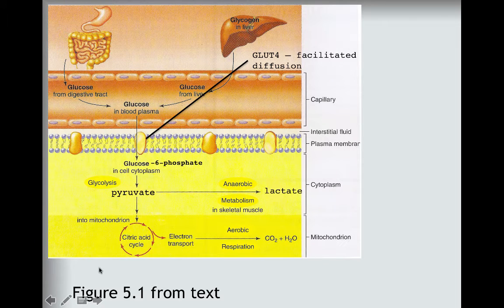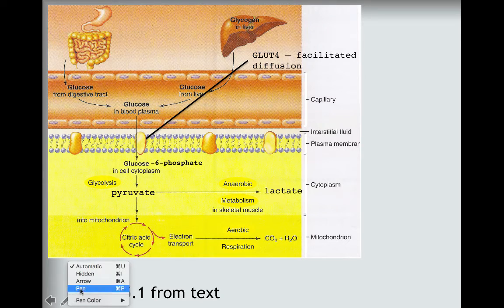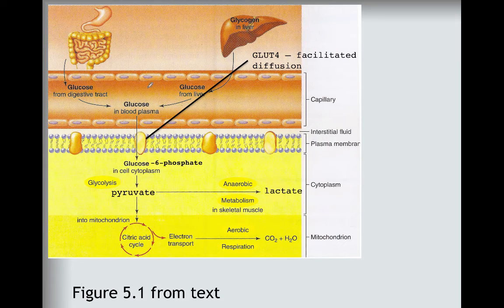Before moving on with the details of glycolysis, let's look at how glucose gets to the inside of a cell. You get glucose in the foods that you eat. For the most part, you eat complex molecules which are broken down to glucose. The glucose moves into the interstitial fluid, and then through facilitated diffusion, the glucose crosses the cell membrane and gets to the inside of the cell.